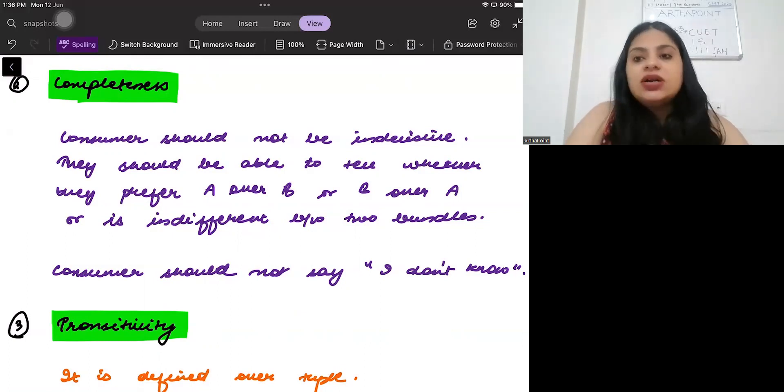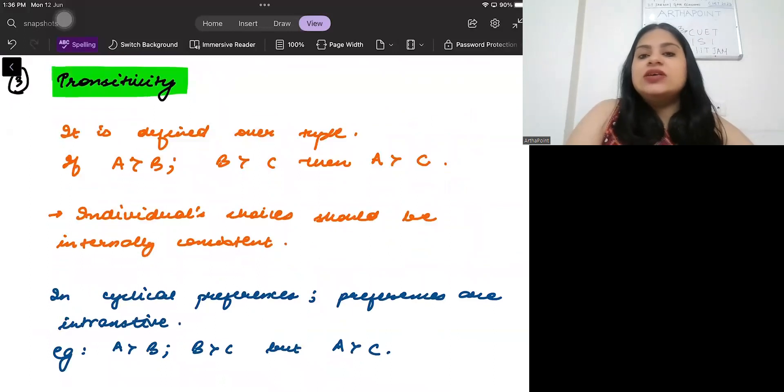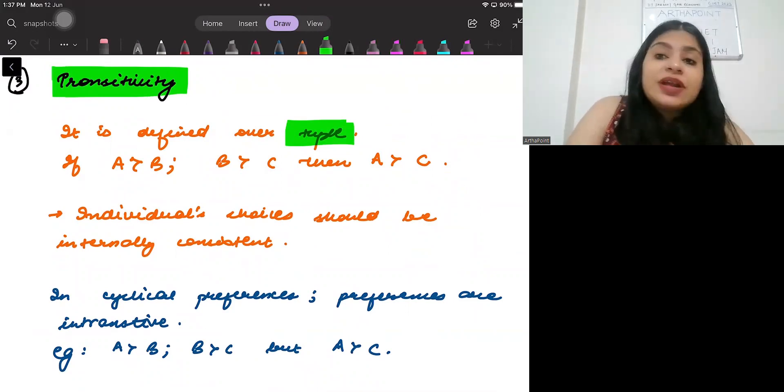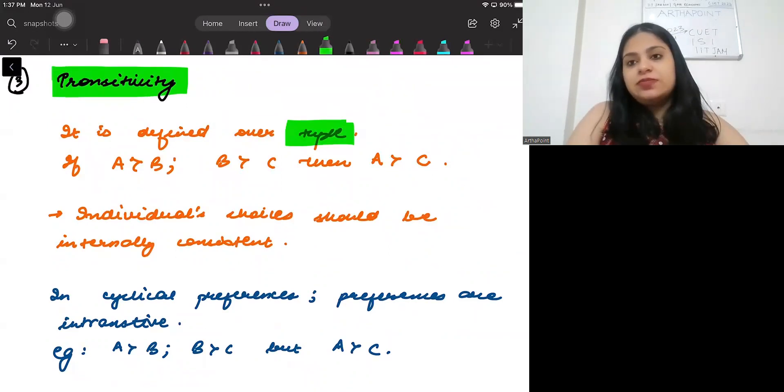Now, the third rationality that we have is called transitivity. Transitivity is defined over a tuple. Over three bundles. For transitivity, three bundles are necessary. We need a minimum of three bundles to define transitivity. What is transitivity? Very simple. If I prefer A over B and B over C, then I should be preferring A over C.